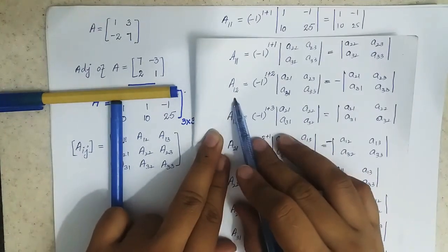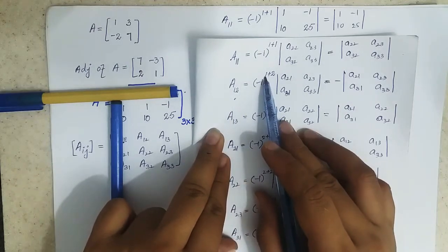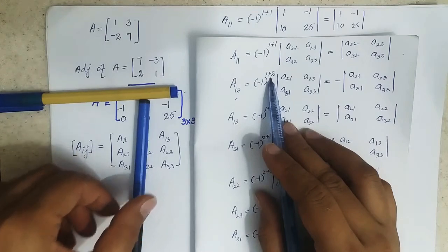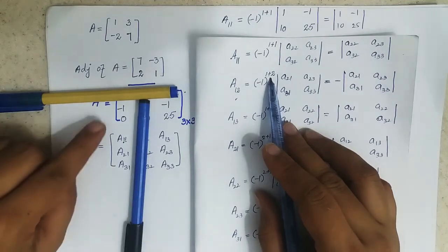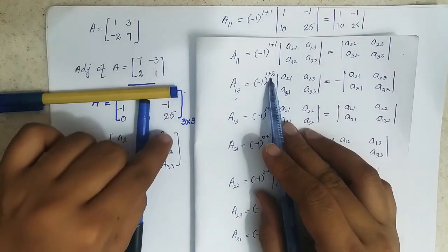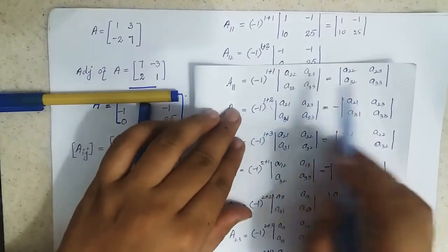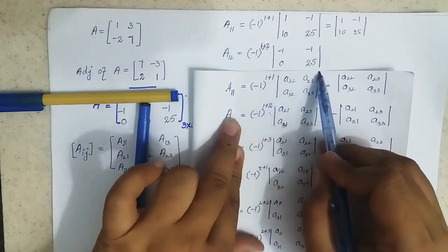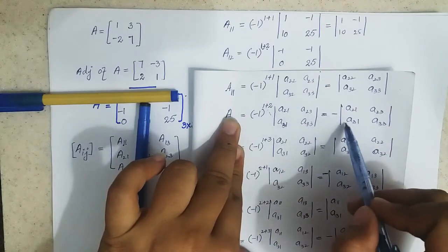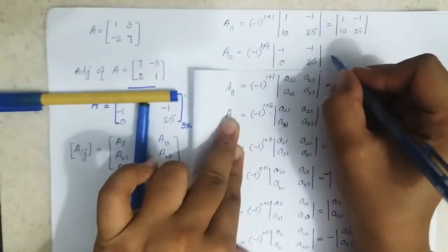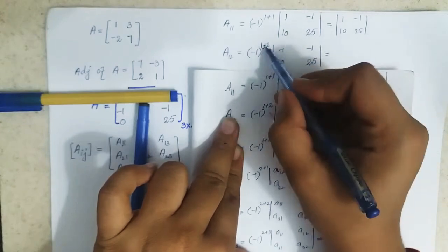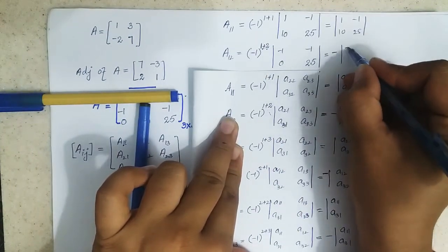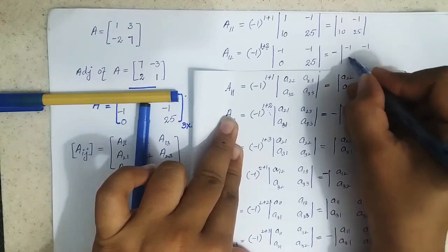For A12, this is the first row, second column element. Leaving the first row and second column, the remaining elements are minus 1, 0, minus 1, 25. Since the power is odd, this is negative of that matrix, giving negative of minus 1, minus 1, 0, 25.